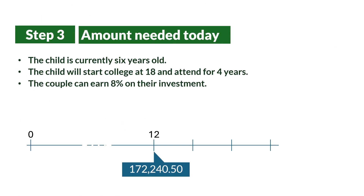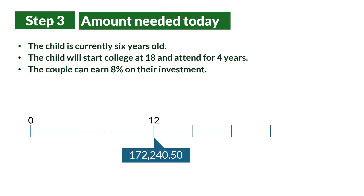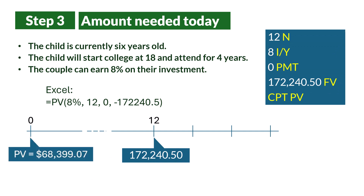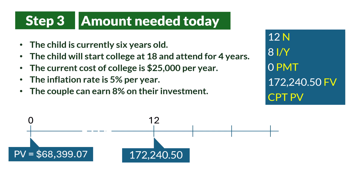Finally, in step 3, we calculate the lump sum needed today to fund this $172,240 needed at the beginning of college. Using the BA2 Plus or Excel, we find the present value to be $68,399. Note that we have used the 8% return rate here because the inflation element was already applied in step 2. Therefore, $68,399 is the amount needed today to fund the child's education.